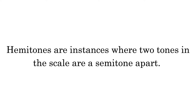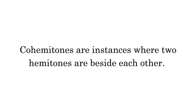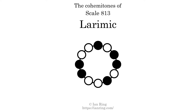Hammertones are instances where 2 tones in the scale are a semitone apart. This scale has 2 hammertones, at positions here and here. Co-hammertones are instances where 2 hemitones are beside each other. This scale has no co-hammertones.